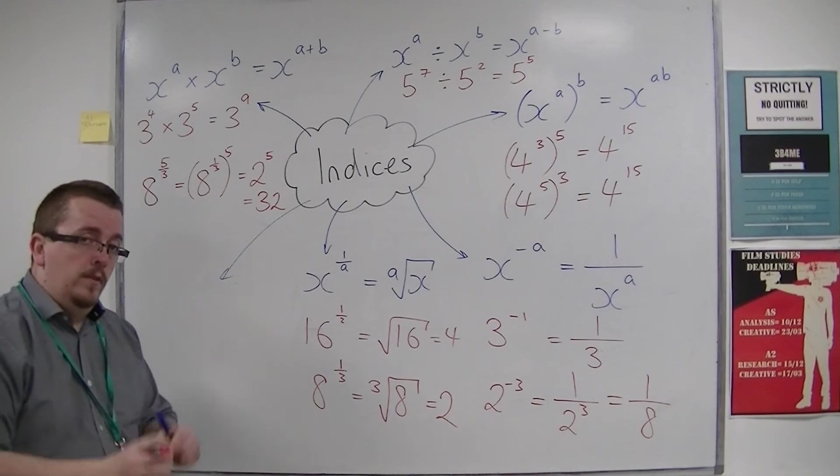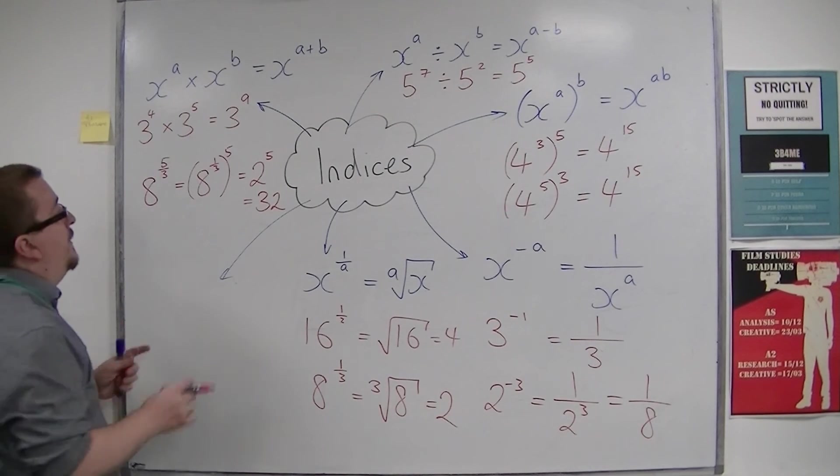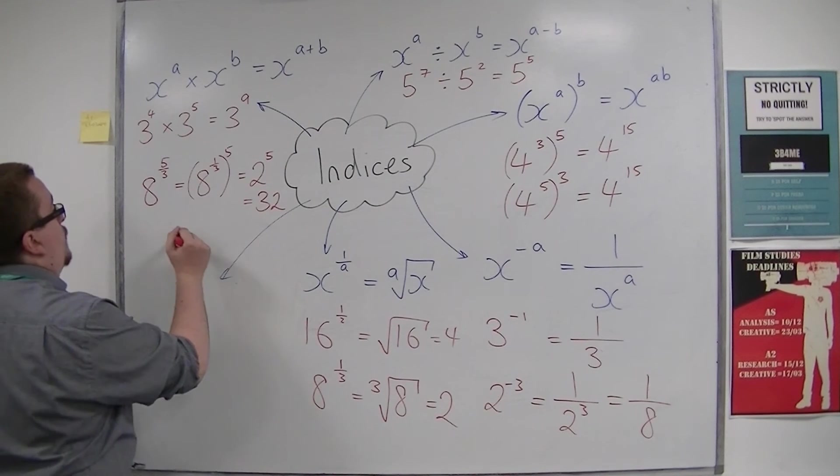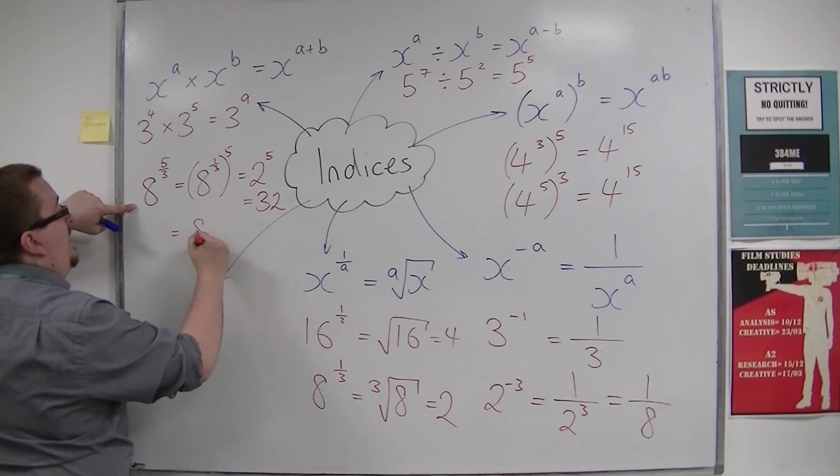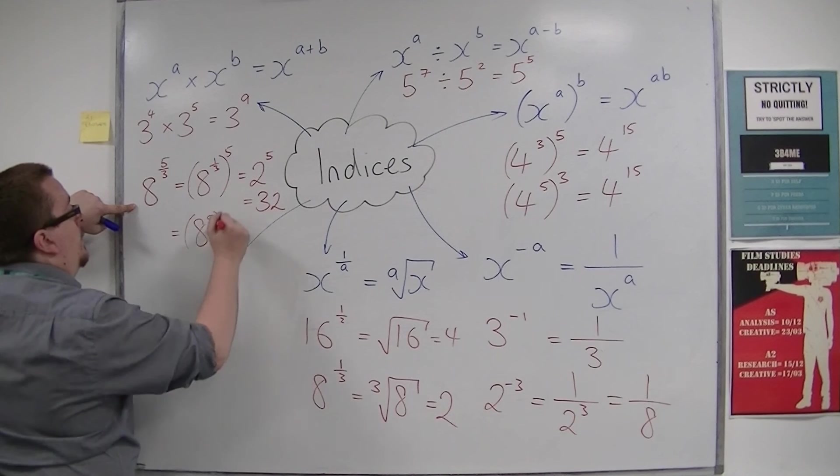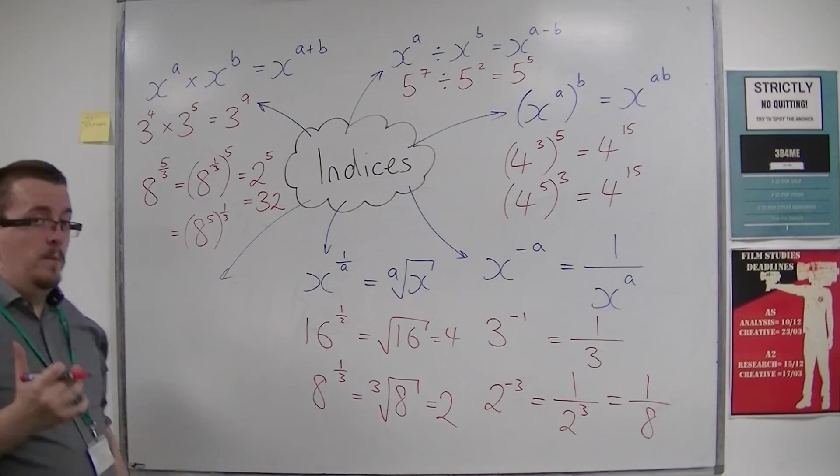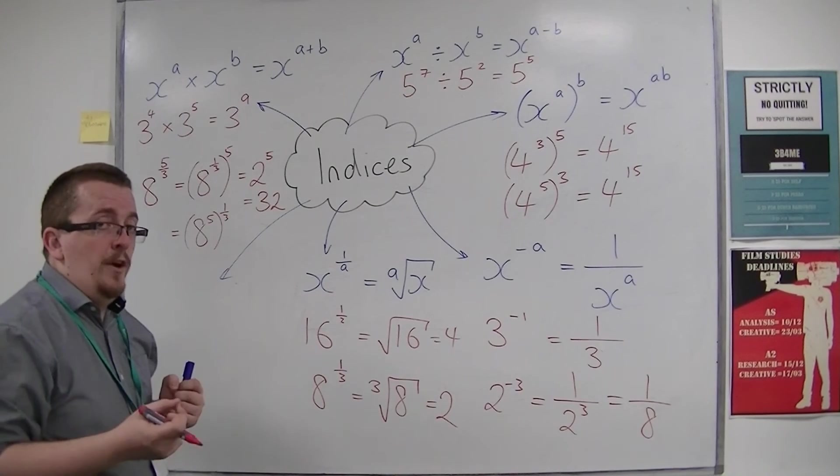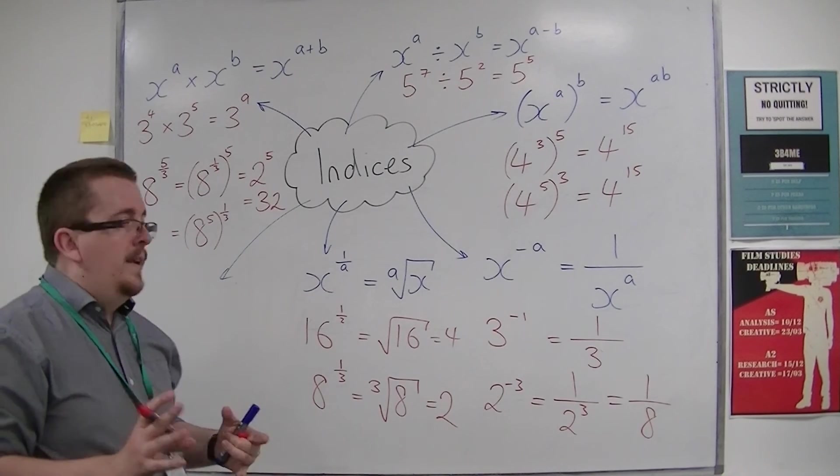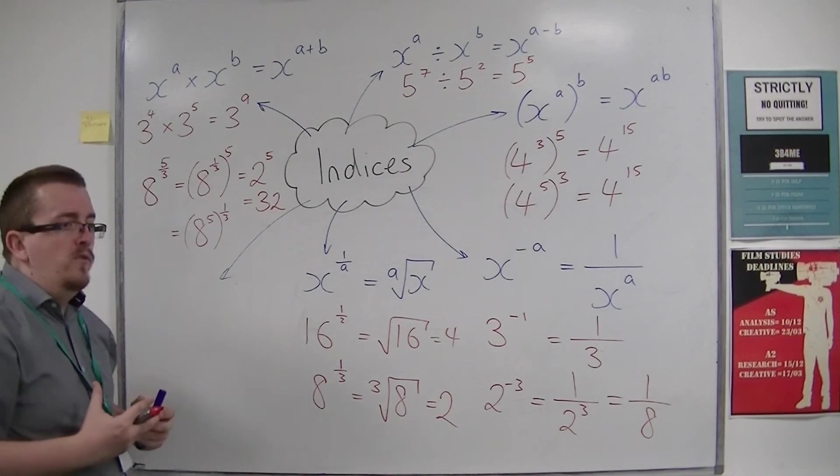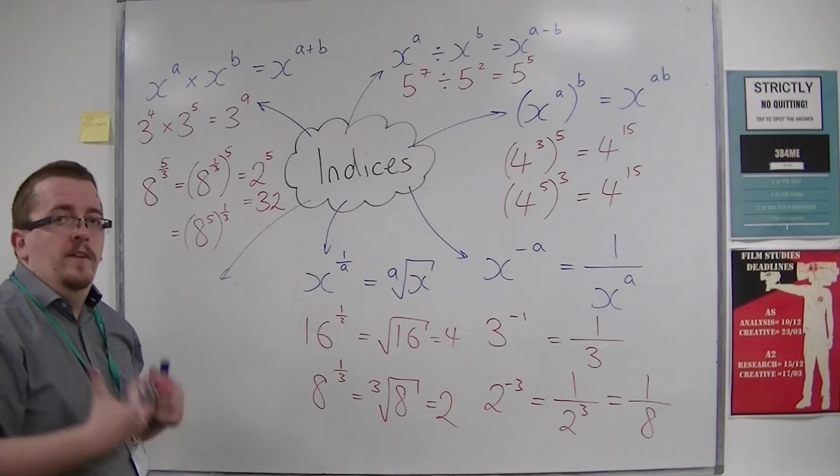I could have gone about this in a different way. I could have said 8 to the 5 thirds is 8 to the power of 5 to the power of a third. But the problem with that is that 8 to the power of 5 is a big number, and then I've got to do the cube root of a big number that I don't really know.